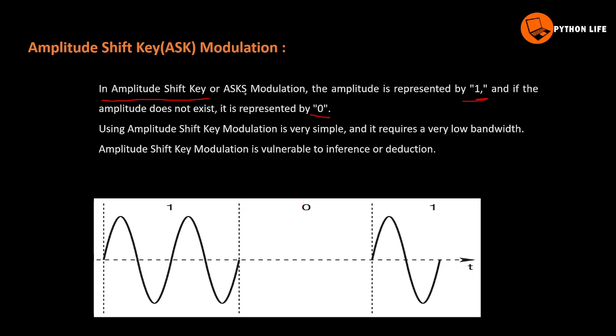One and zero represent data. If the amplitude is one data can be transmitted; if zero, the amplitude does not exist. Using Amplitude Shift Keying modulation is very simple and it requires a very low bandwidth. However, ASK modulation is vulnerable to interference.